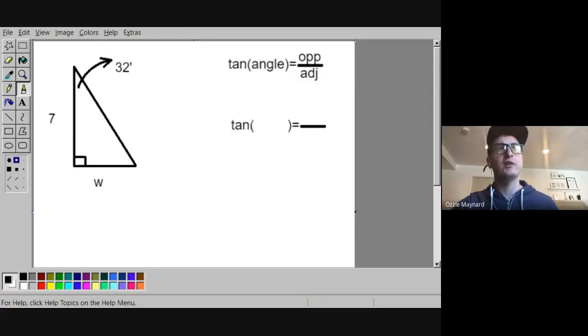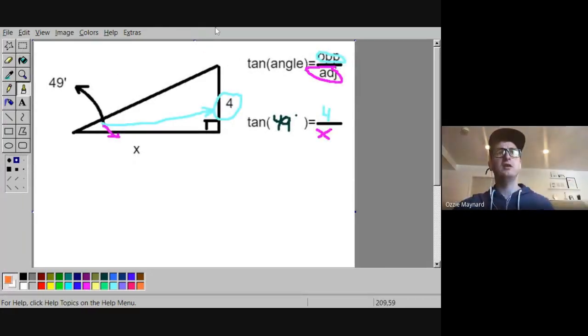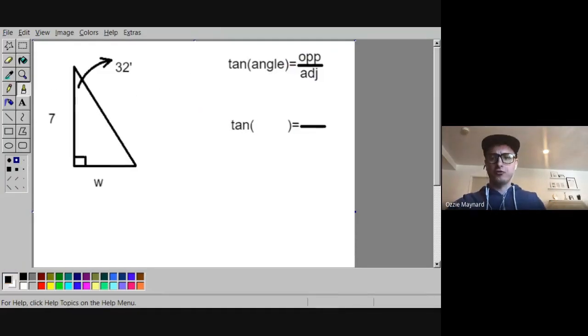Let's see if you can do this one. Tangent of your angle, so tangent of 32 is equal to opposite over adjacent. Opposite in this case, look at your angle, across from it is the w. So that's got to go on top. And adjacent is right next to our angle, which is the 7.